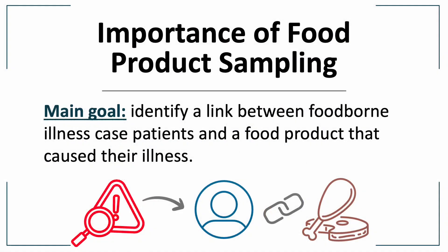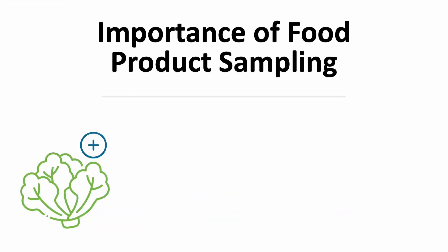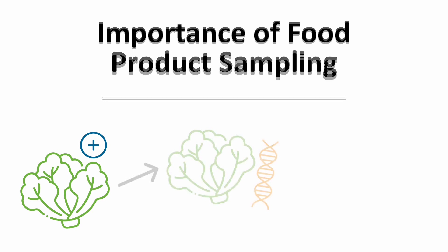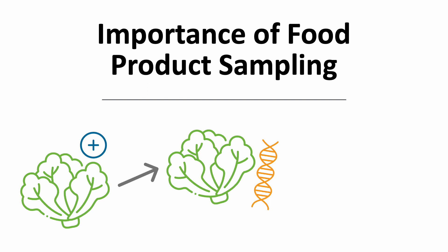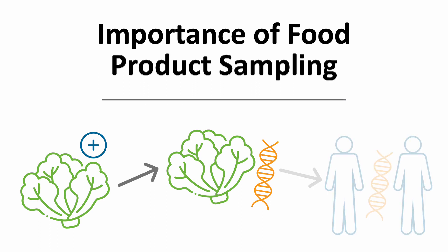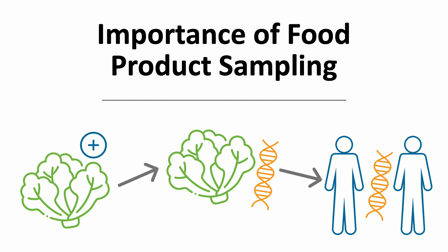The main goal of product sampling is to identify a link between foodborne illness case patients and a food product that caused their illness. Food product sampling is very important in outbreak investigations. If a given food product sample tests positive for a pathogen of interest, laboratories can characterize those pathogen isolates through whole genome sequencing and match them to isolates from human clinical cases, allowing public health agencies to determine the source of an outbreak quicker.